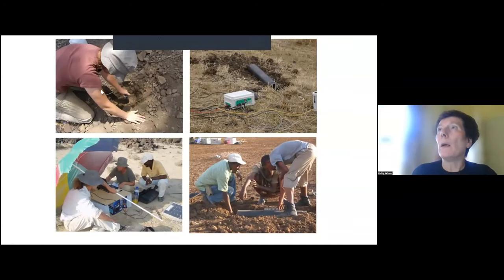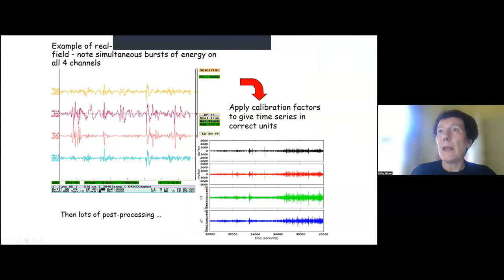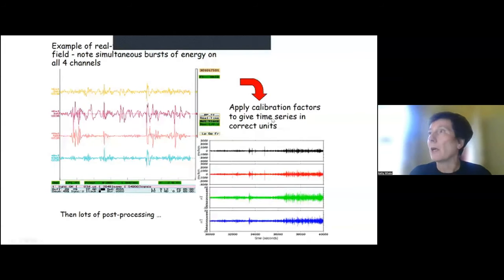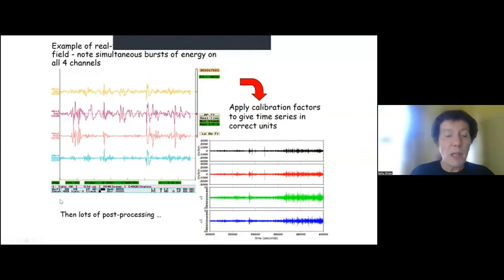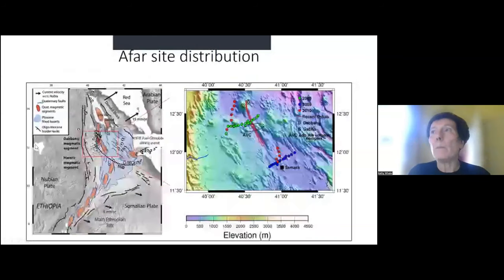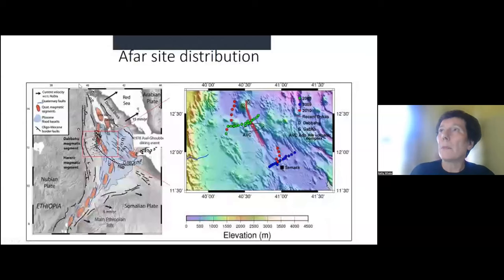And here's an example of real-time data. Here are the four components that we're recording, the two magnetic ones at the bottom, the two electric ones at the top. This is a two-second timescale. And you can see that there are simultaneous bursts of energy in all four components. So these are the signals that we're trying to identify that are telling us about the subsurface structure. And then we do calibration factors to give time series in the correct units. So here are the magnetic field changes and here are the electric field changes over now a much longer timescale.